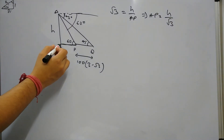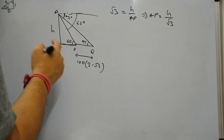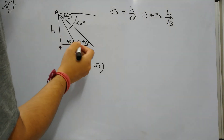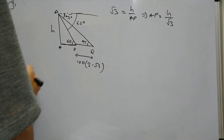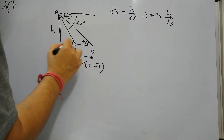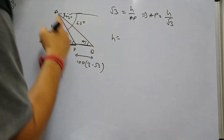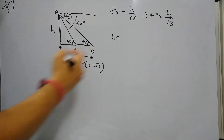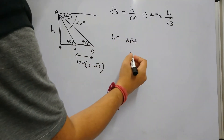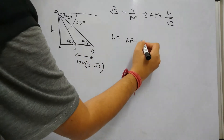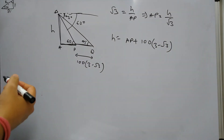In the second triangle ABQ, if we take tan 45°, then tan 45° = 1, so AB upon AQ equals 1, meaning AB and AQ are the same. So AB = H, and AQ = AP + PQ, which is AP + 100√3.